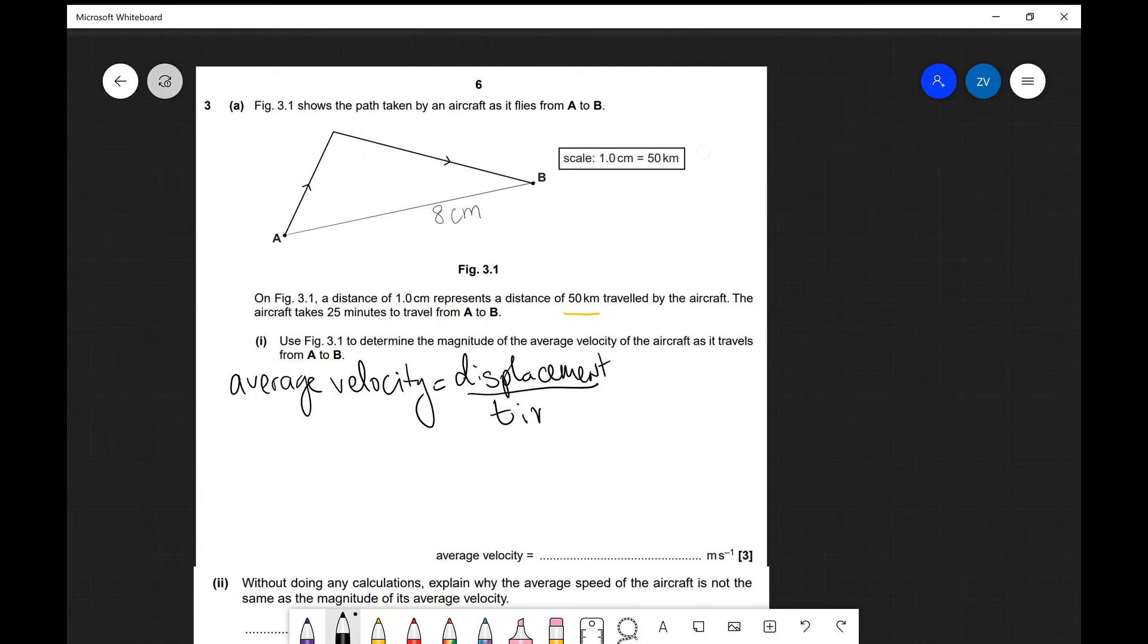So divided by time now my displacement is not going to be 8 centimeters that's kind of a small displacement for an airplane however it's going to be 8 times 50 kilometers and a kilo stands for 10 to the 3 and I'm going to need to divide that by the time which needs to be in seconds so it's going to be 25 times 60 and if I put that into a scientific calculator I'm going to get 266.67.